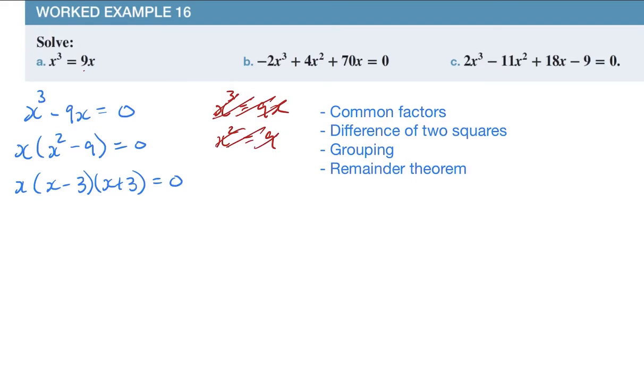And then what I use is the null factor theorem. The null factor says that if I have a times b times c equals zero, then a is zero or b is zero or c is zero.